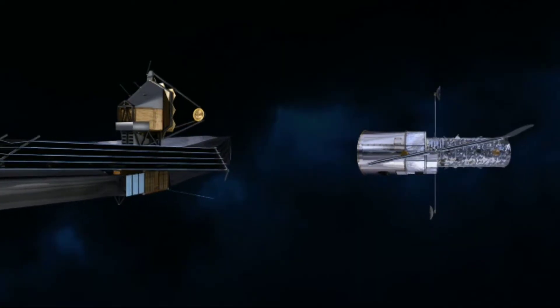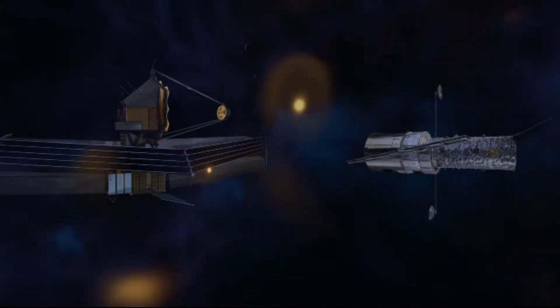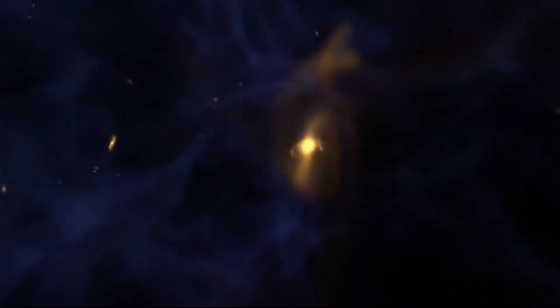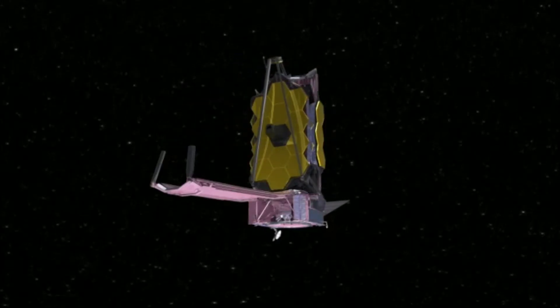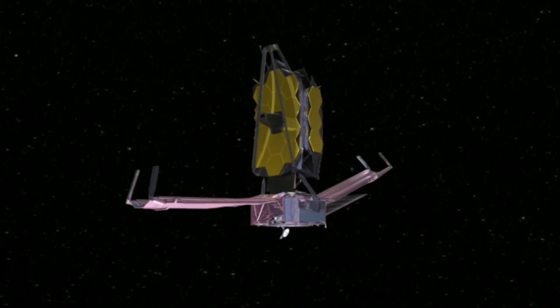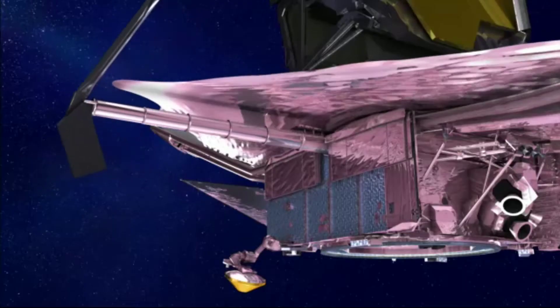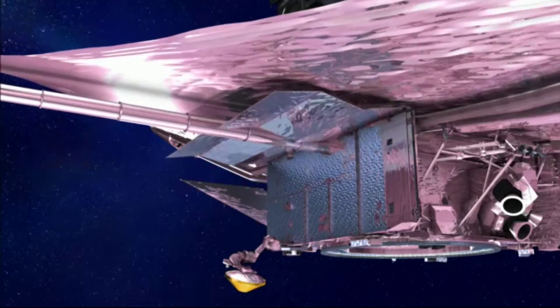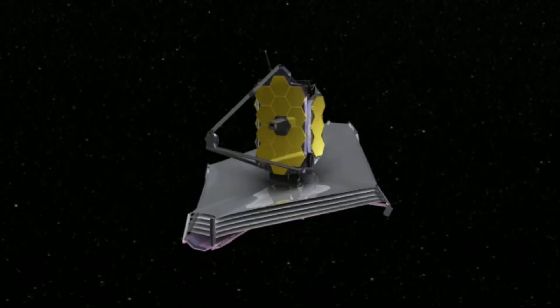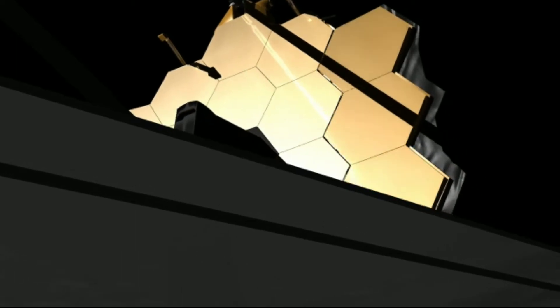The James Webb Space Telescope will be the premier space observatory for astronomers ever placed in orbit. Webb is 100 times more powerful than Hubble. It is so big that it has to fold origami style to fit in the rocket and will unfold like a transformer in space.